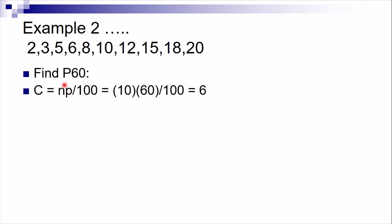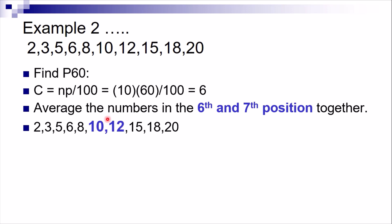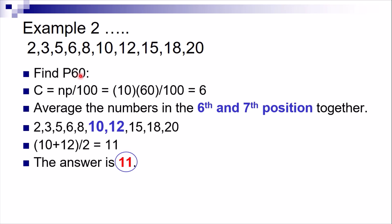Find P60: n = 10, p = 60. So c = 10 × 60 ÷ 100 = 6. Since 6 is a whole number, get the average of the 6th and 7th positions. The 6th value is 10 and the 7th is 12. Average = (10 + 12) ÷ 2 = 22 ÷ 2 = 11. Therefore P60 = 11.